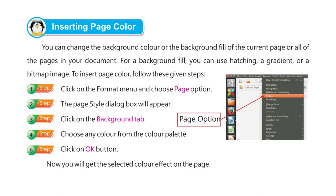To insert the page color, follow these steps. Step 1: Click on the Format menu and choose the Page option. Step 2: The Page Style dialog box will appear. Step 3: Click on the Background tab. Step 4: Choose any color from the color palette. Step 5: Click the OK button. Now you will get the selected color effect on the page.